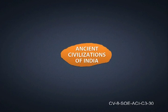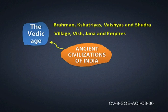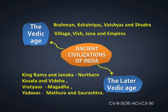In this capsule, under ancient civilization of India, we have studied about the Vedic Age. During that period there were four Varnas: Brahman, Kshatriyas, Vaishyas, and Shudras. The administration units were village, Vish, Jana, and Empires. Then in the Later Vedic Age: King Rama and Janaka ruled Northern Kosala and Videha; Vratyas ruled Magadha; and Yadavas ruled Mathura and Saurashtra.